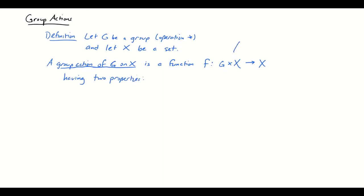Just in case you're unfamiliar, G cross X is the set of ordered pairs (g, x) such that g belongs to G the group and x belongs to the set X. Now I've got three different x-looking symbols in play: lowercase x, the times symbol, and capital X. I'll try to make the variable x look a little more distinct.